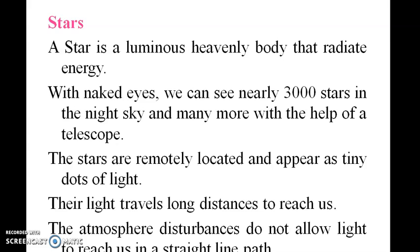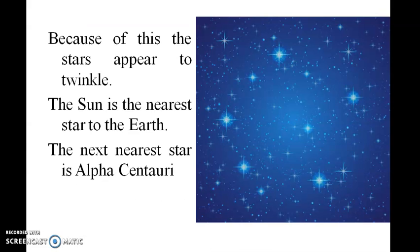A star is a luminous heavenly body that radiates energy. On a clear night we can see nearly 3,000 stars in the sky, and many more with the help of a telescope. Stars are remotely located and appear as tiny dots of light. The light travels a long distance to reach us, and atmospheric disturbance does not allow light to reach us in a straight-line path. Because of this, the stars appear to twinkle.